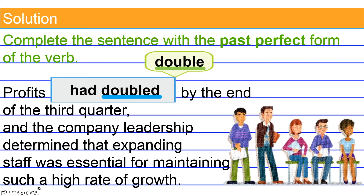Note that the past tense form of the helping verb 'to have' — 'had' — is going to be the same regardless of whether the subject is singular. For example, the noun 'company' is singular because it refers to only one company. Or 'had' is going to be the same regardless of whether the subject is plural. In our situation, the subject of the verb is plural — 'profits,' meaning more than one profit.